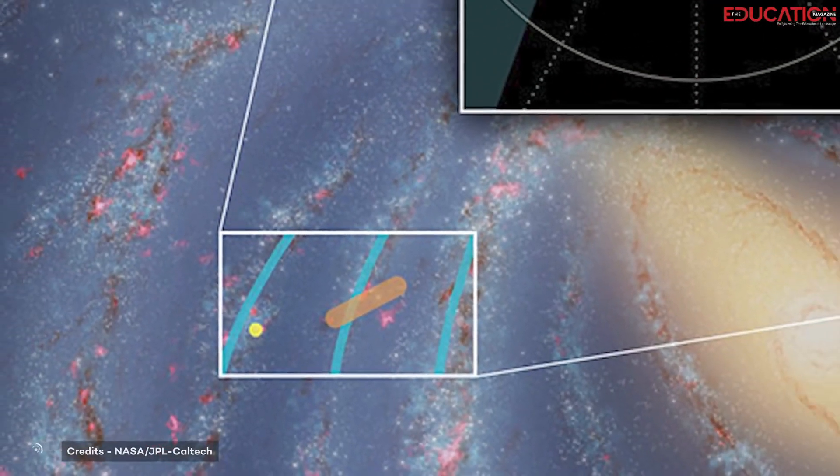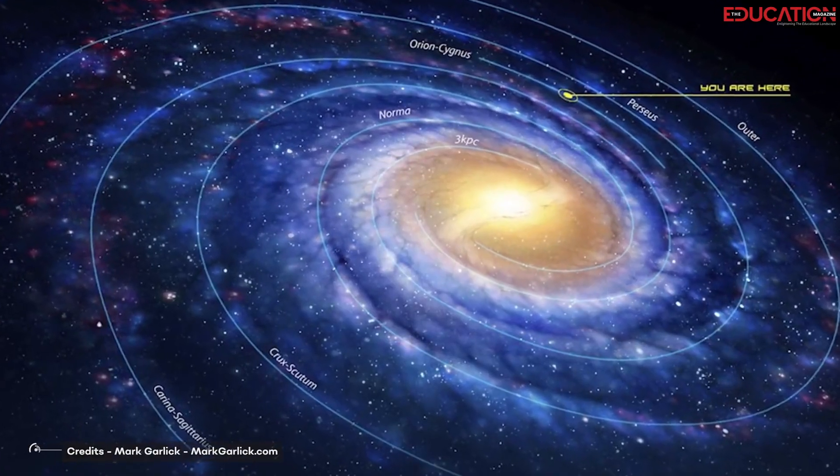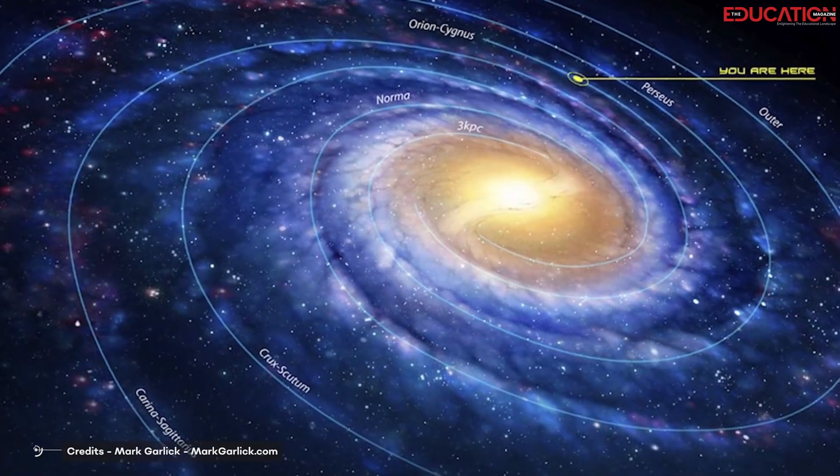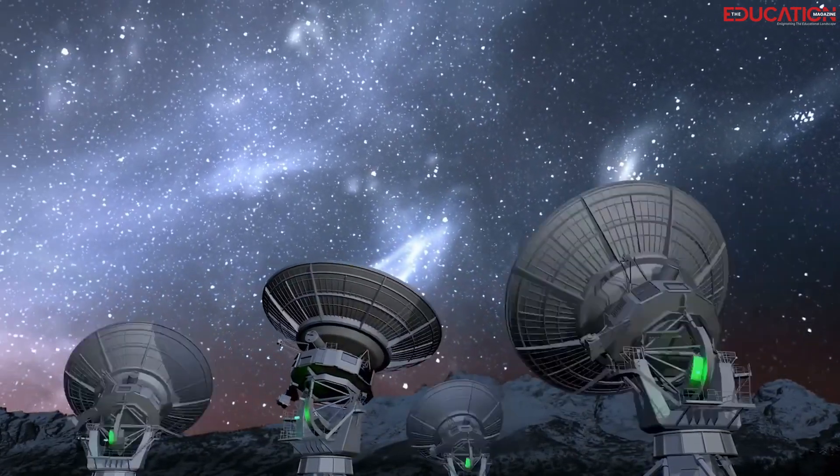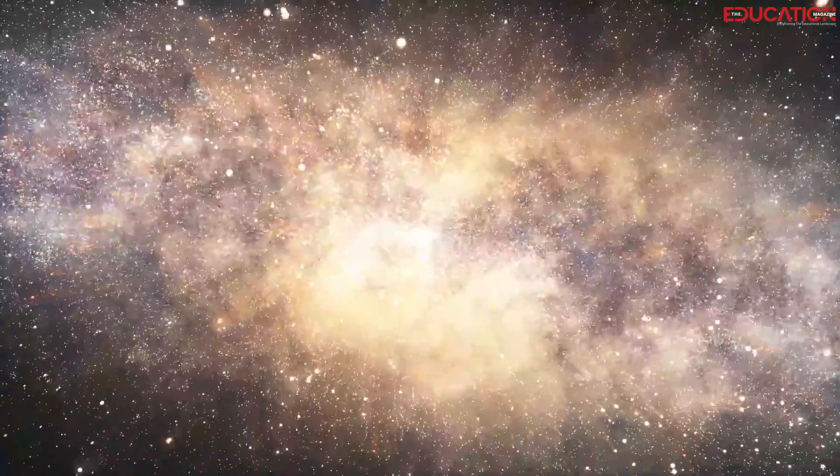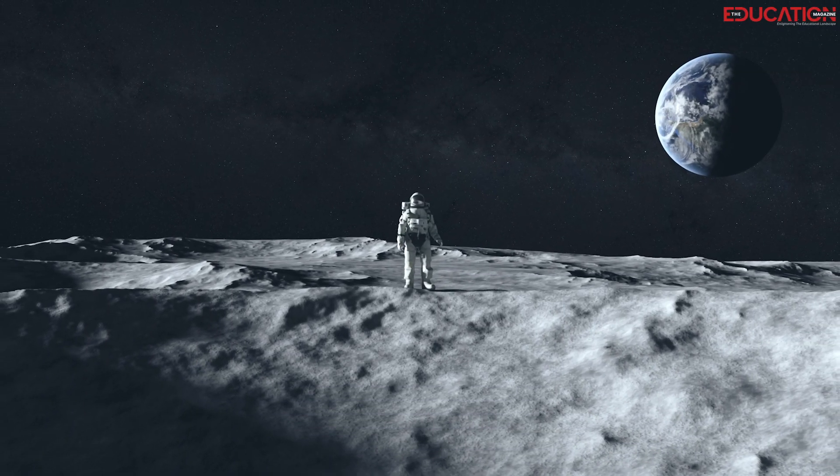Determining our location in the Milky Way is a complex and ongoing process. In the future, astronomers hope to learn more about our location in the Milky Way. They plan to use new tools and techniques to study the galaxy in greater detail. This will help us understand how the Milky Way formed and evolved and allow us to find new planets and life beyond Earth.